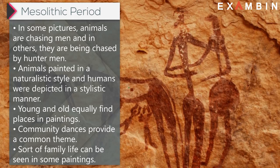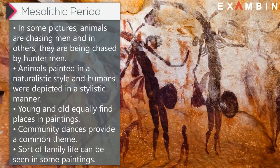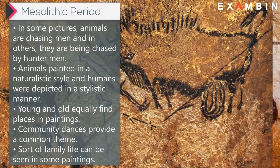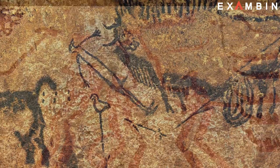Animals were painted in a naturalistic style and humans were depicted in a stylized manner. Young and old equally find places in paintings. Community dances provide a common theme. Scenes of family life can also be seen — women, men, and children together.